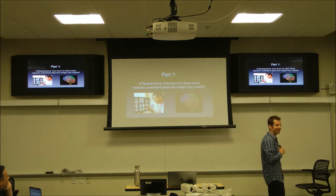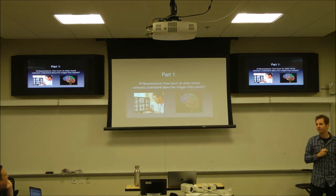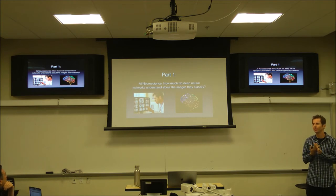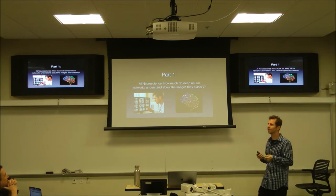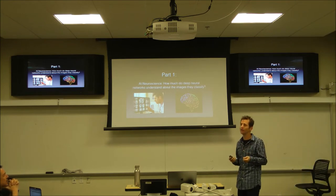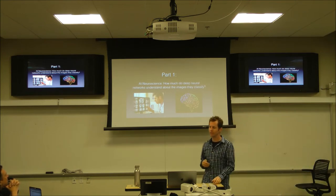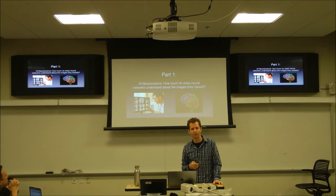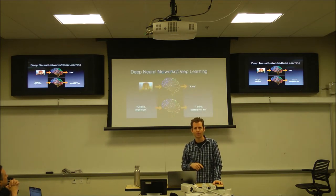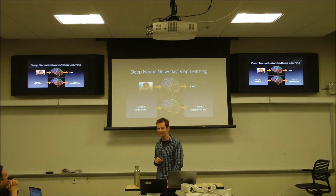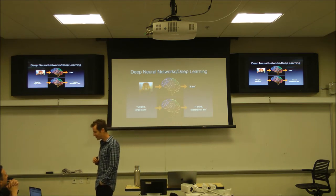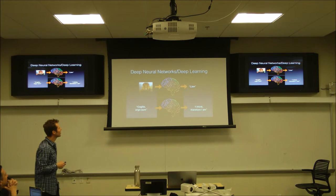On to part one of the talk: AI neuroscience, which is the question of how much do neural networks understand about the world they operate in? Deep learning has taken off, it's very powerful, and a lot of people are investing in and deploying it. The question is how much do those networks understand about the world they operate in, and how does that relate to your understanding of the world?